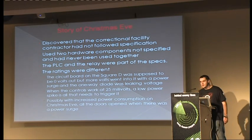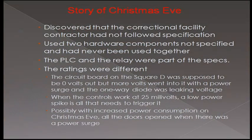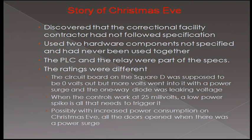John was called by the warden of a prison on Christmas Eve — there was a problem. All the doors had come open on death row. It was theorized that maybe because of Christmas time there were different power draws, but it really came down to a couple of parts that were out of spec — something was leaking voltage that it shouldn't have, and all the doors flew open on death row. The thing to remember is that people on death row don't really have anything to lose, so it's extremely dangerous.